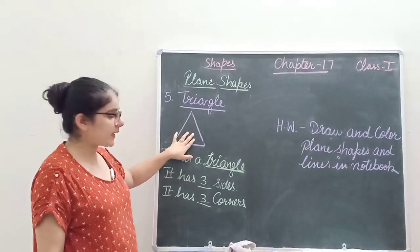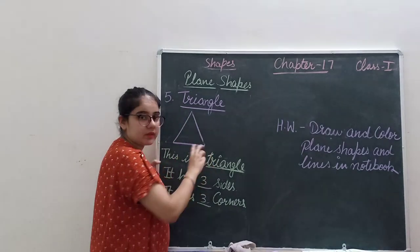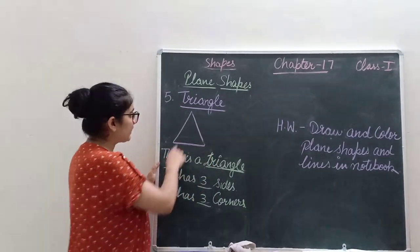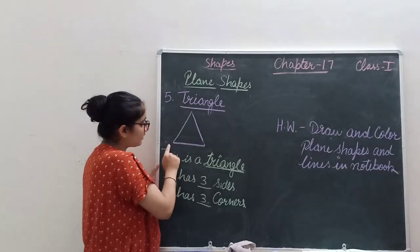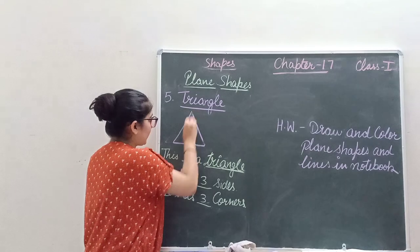You can see this is a triangle. It has three sides and three corners. One, two, three. There are three sides in a triangle and it has three corners. One, two, and three corners. So this is our triangle.